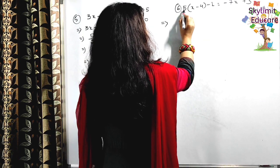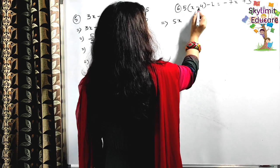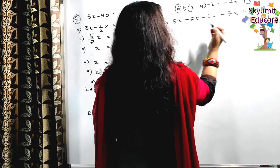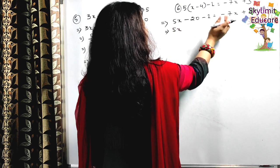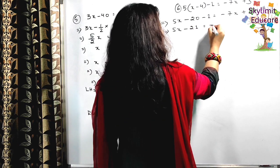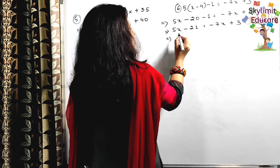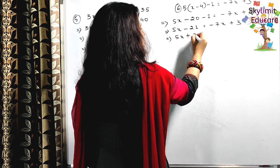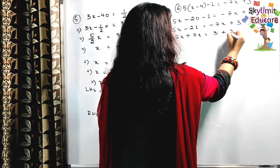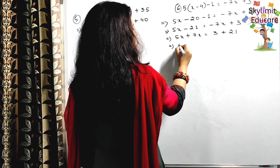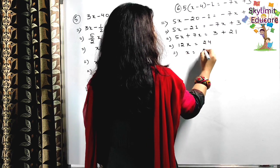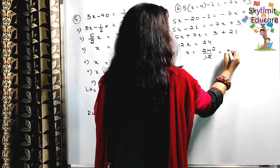Now the last question. Multiply 5 by x to get 5x, and 5 by minus 4 to get minus 20. Then there is a minus 1, giving 5x - 20 - 1. On the right side we have minus 7x + 3. Simplify the left: minus 20 minus 1 = minus 21. So 5x - 21 = -7x + 3. Bring minus 7x to the left — it becomes plus 7x. Take minus 21 to the right — it becomes plus 21. So 5 + 7 = 12x, and 3 + 21 = 24. Therefore x = 24 ÷ 12 = 2.